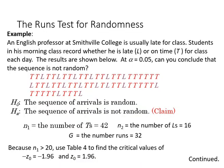Here's an example of the runs test. We have an English professor at a college who's usually late for class. Students decide to record whether he's late or on time, so L or T. The results are below. At the 0.05 level we want to know if we can conclude that the sequence is not random.